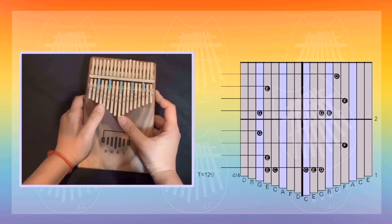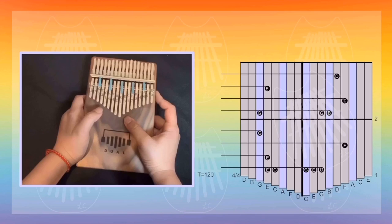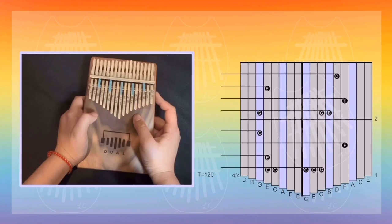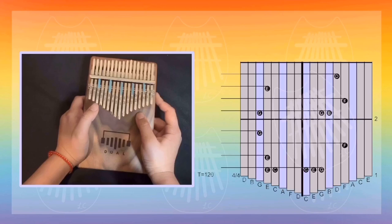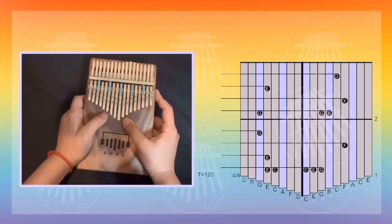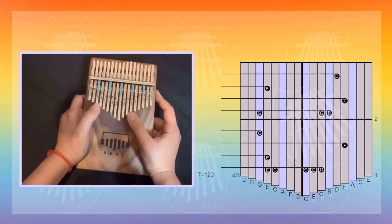Let's play it together. The next notes are E, then F, G. The second measure is G, B, and then G, followed by F, E, D. Let's play that together.